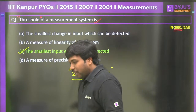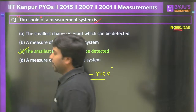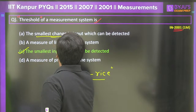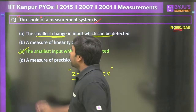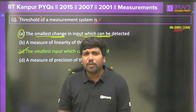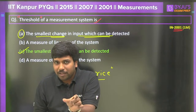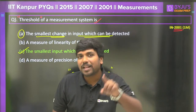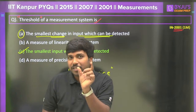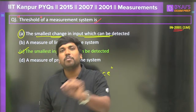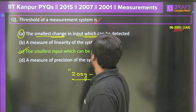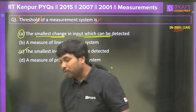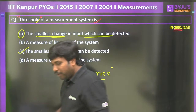Some students may go with option A, which states 'the smallest change in the input which can be detected.' But that is actually the definition of resolution. Whenever you see the minimum amount of change required so that the output can be detected, that is resolution. But the smallest input that can generate an output is threshold. Hope this is very clear.